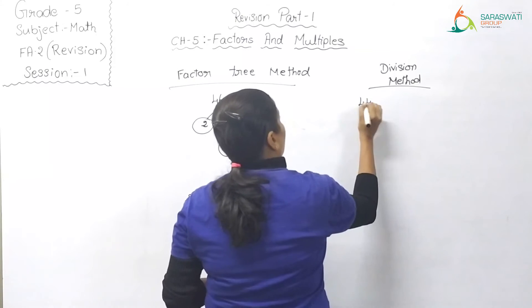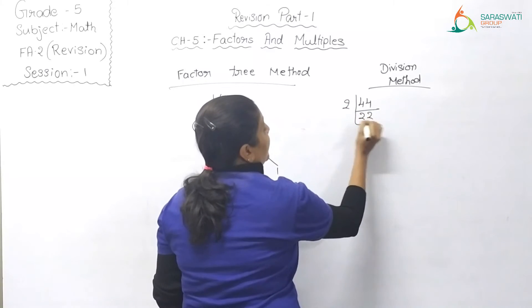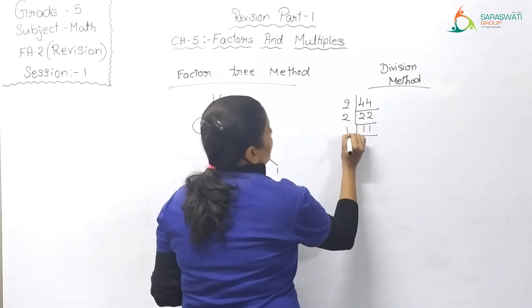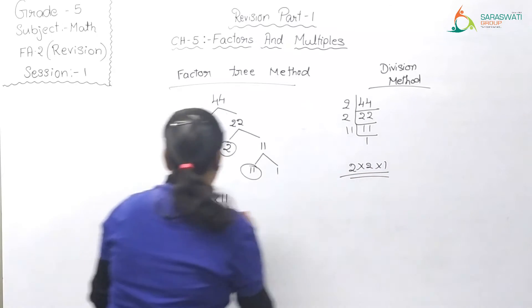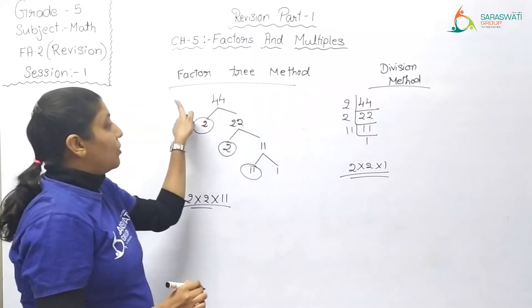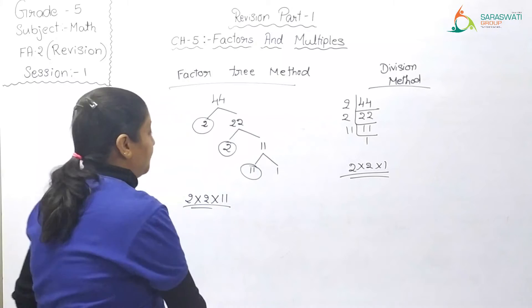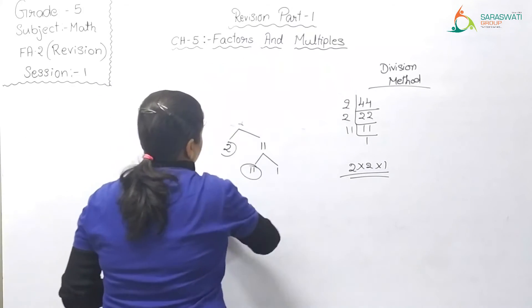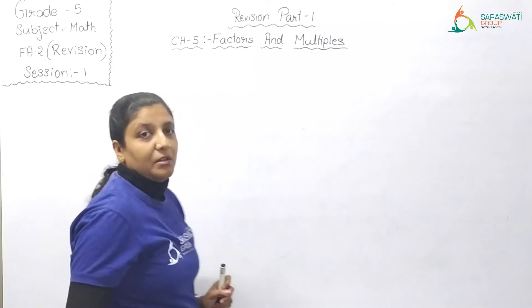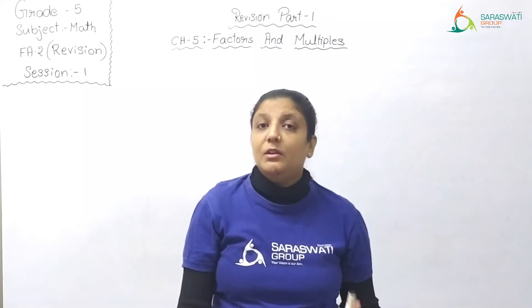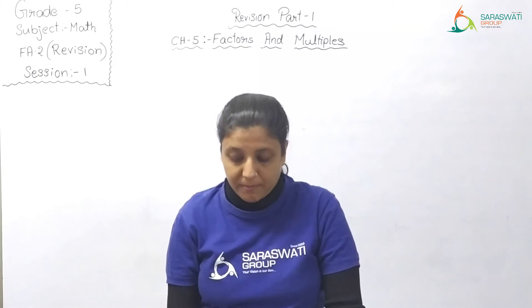Now using the division method for 44: 44 ÷ 2 = 22, then 22 ÷ 2 = 11, then 11 ÷ 11 = 1. So we also get 2 × 2 × 11. This shows that whichever method you use, the factors are the same. However, if the exam specifies a particular method, use that method.